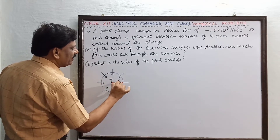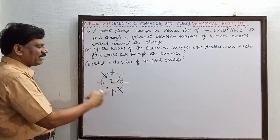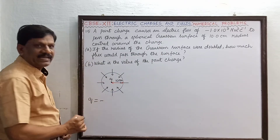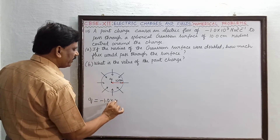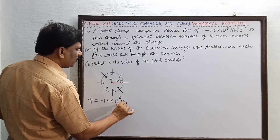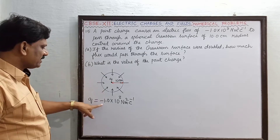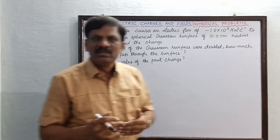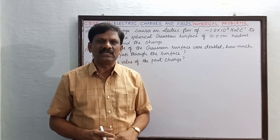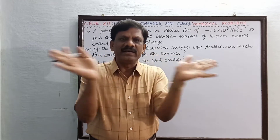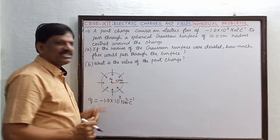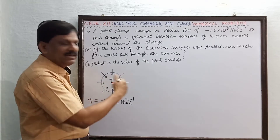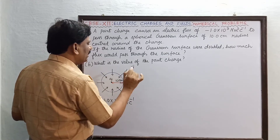This sphere has a radius of 10 centimeters, and the charge Q enclosed is negative. Since the given charge is negative, the electric flux lines are pointed inwards. In previous numericals we handled positive charges — for positive charges, the flux is always pointed outwards. But here, since the charge at the center is negative, the electric flux lines are pointed inwards. Let phi net be the net electric flux.